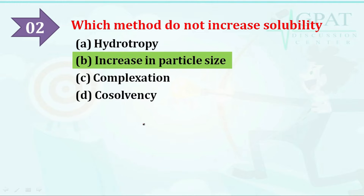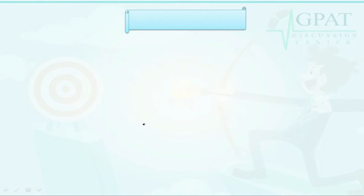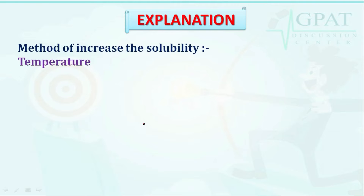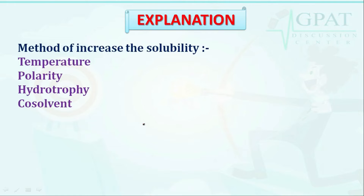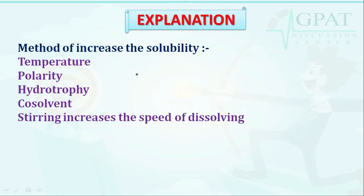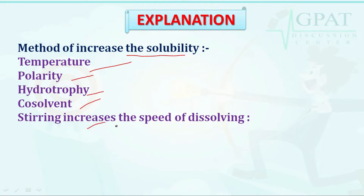The methods that increase solubility are: temperature, polarity, hydrotrophy, co-solvents, and stirring, which increases the speed of dissolving and thereby increases solubility.